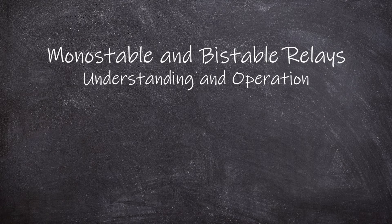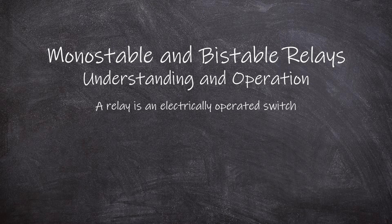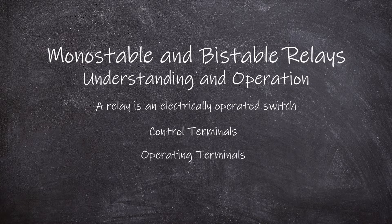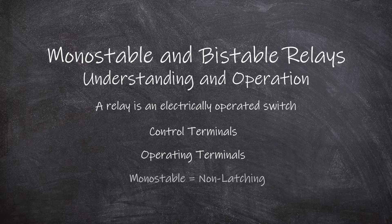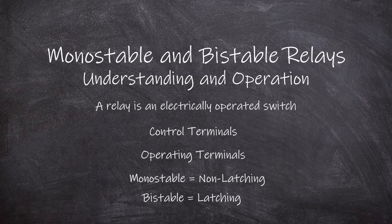Today, let's discuss the differences between mono-stable relays and bi-stable relays. First, let's define our terms. A relay is an electrically operated switch which consists of a set of control terminals and a set of operating terminals. Mono-stable relays are also known as non-latching and bi-stable relays are also known as latching. For the duration of this video and for clarity, we will refer to these relays as mono-stable and bi-stable only.